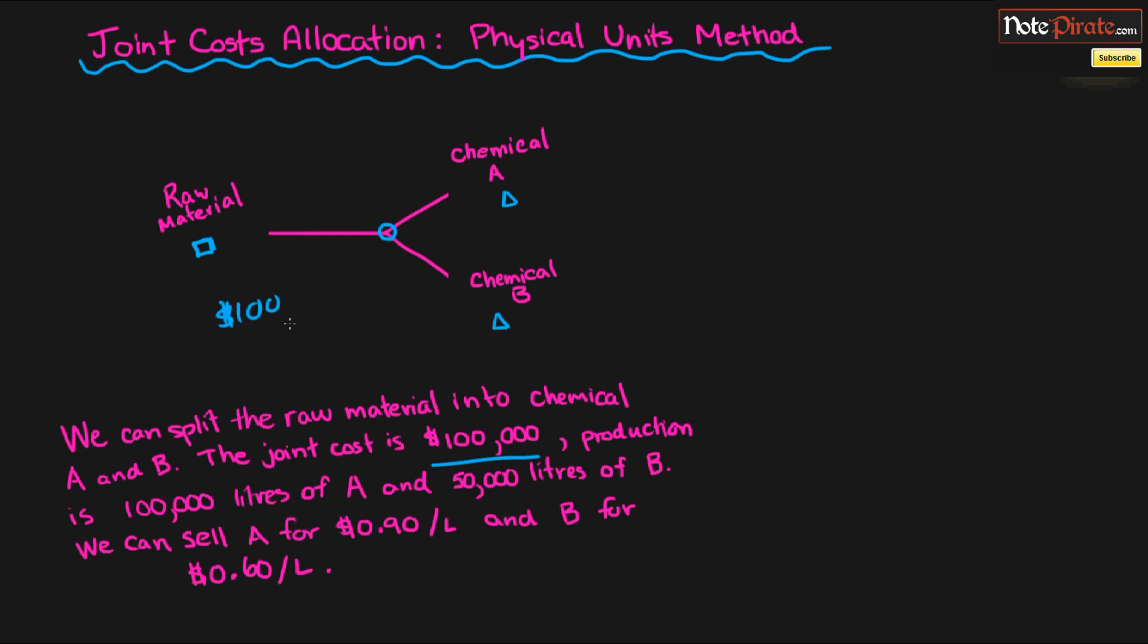Our joint cost is $100,000, which means $100,000 to produce these two units. Production is 100,000 liters of A, 50,000 liters of B, and we can sell them for $0.90 a liter of A and $0.60 a liter for B. How are we going to do this?